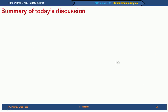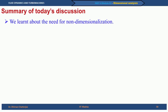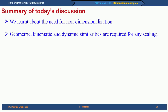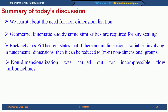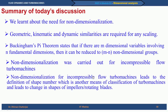To summarize today's discussion on dimensional analysis: we learnt about the need for non-dimensionalization, and talked about geometric, kinematic, and dynamic similarities required for any scaling. Buckingham's Pi theorem states that if there are m dimensional variables involving n fundamental dimensions, it can be reduced to m minus n non-dimensional groups. This non-dimensionalization was extended to incompressible flow turbo machines, leading to the definition of shape number — another means of classification of turbo machines — which relates to the change in shapes of impellers and rotating blades. Thank you.